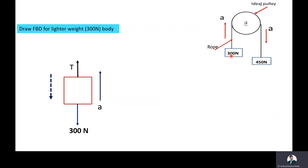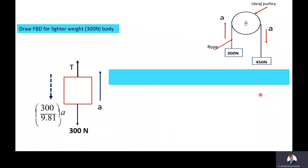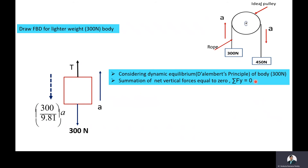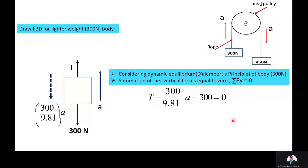Here M is equal to 300 by 9.81 and A is the acceleration, so the inertia force (MA) acts vertically downward. Now we apply D'Alembert's principle — the dynamic equilibrium condition — so that the summation of net vertical forces equals zero (ΣFi = 0). The 300N force acts downward and the inertia force (300/9.81)·A also acts downward, whereas tension T acts upward. This gives us: T − (300/9.81)·A = 300. This is equation number 1.